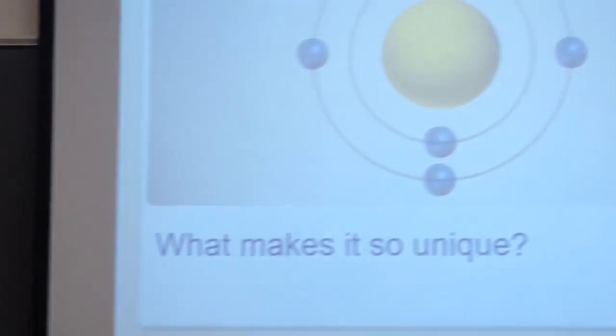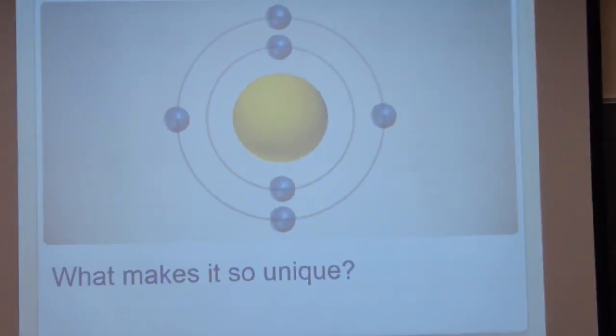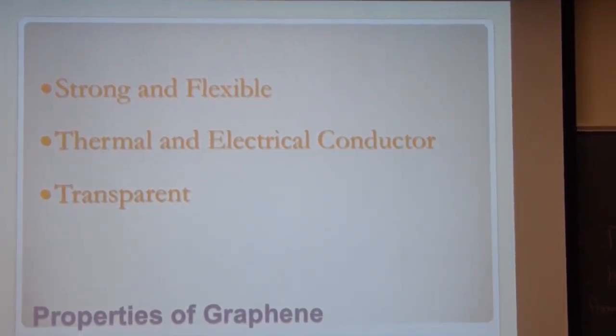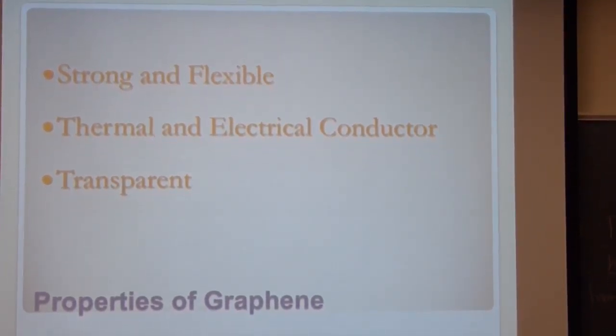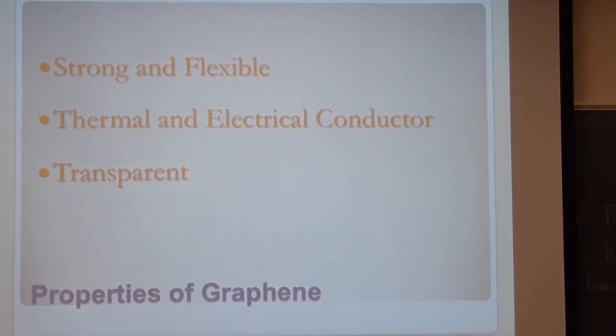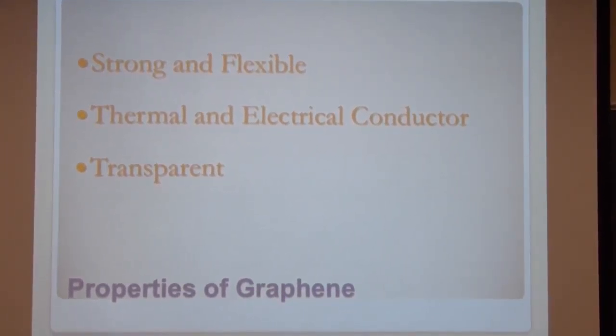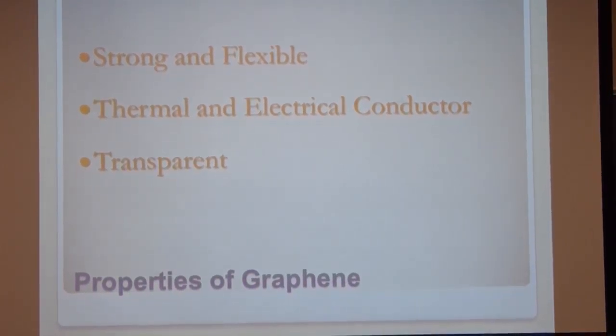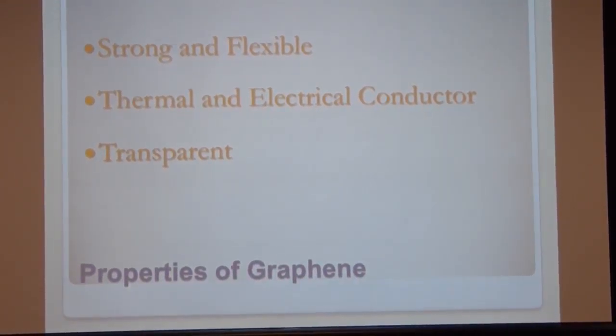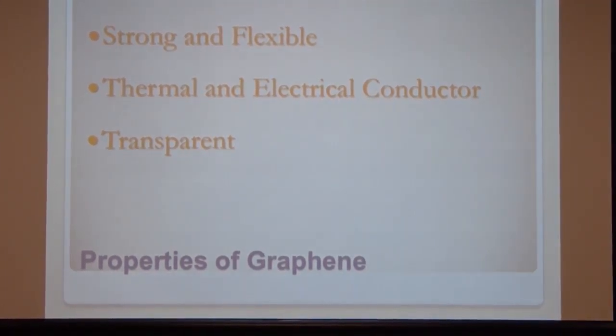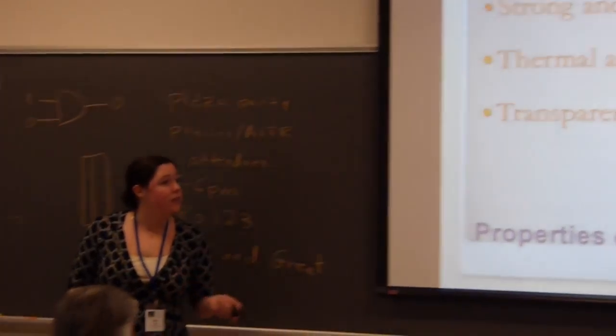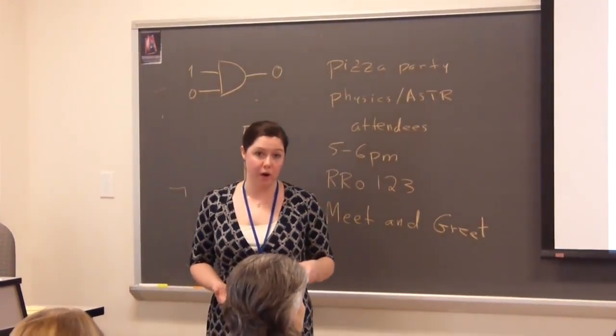But so, what makes graphene so unique? It's just one layer of carbon, but it has all these really incredible properties that really weren't predicted. So, it's extremely strong. It's 100 times the strength of steel. But it's also flexible. It can stretch 20% of its length without any damaged material. It's the best thermal and the best electrical conductor that anyone's ever found. And in addition to that, it's 97% transparent.